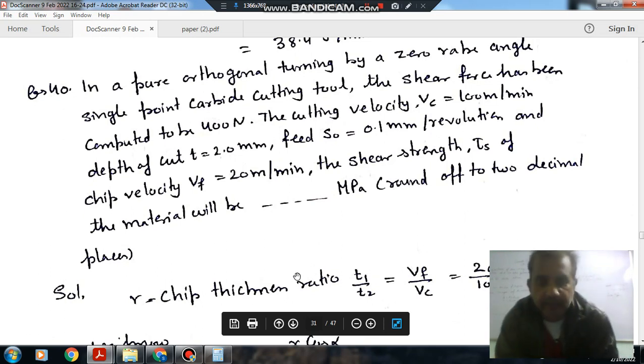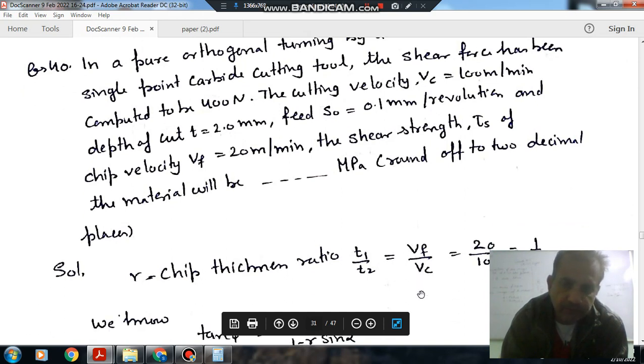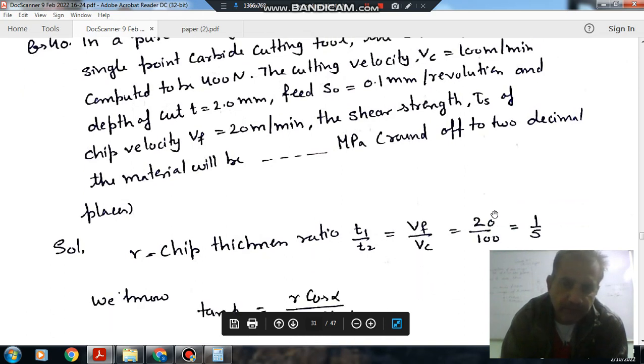Metal that is entering the cutting will be equal to the metal leaving the machining in a particular time. So metal entering is T1 times W times Vc, that is Vc cutting velocity. And metal leaving is T2 times W times Vf. So T1 by T2 is equal to Vf by Vc, where Vf is your chip velocity and Vc is cutting velocity. So chip thickness ratio can be related like this also. That is 20 by 100, which is 1/5.